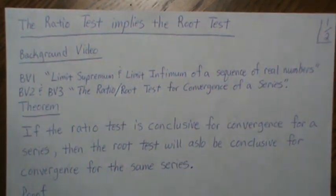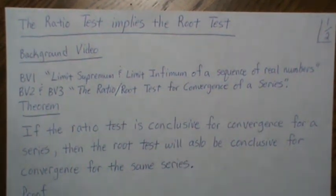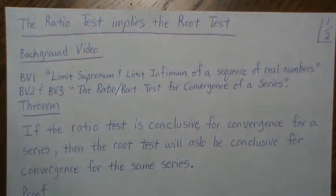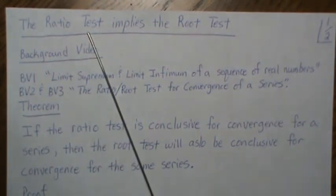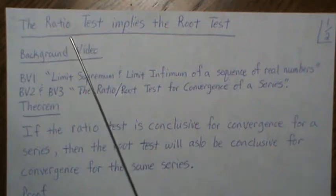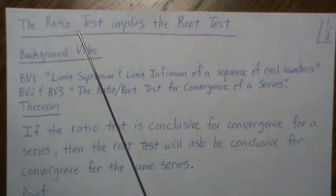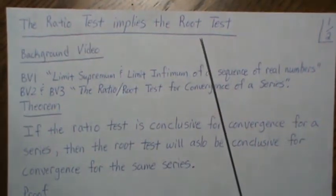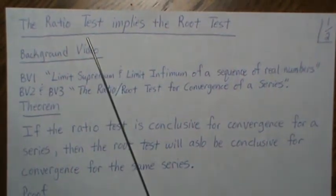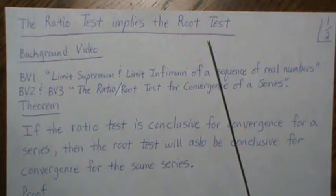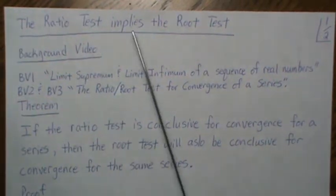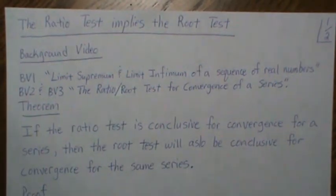In the previous two videos we looked at the ratio test and the root test for convergence of a series. In this video we're going to show that if the root test indicates convergence, then so will the ratio test. If the ratio test implies that the series is divergent, then so is the root test. So the ratio test implies the root test for convergence.